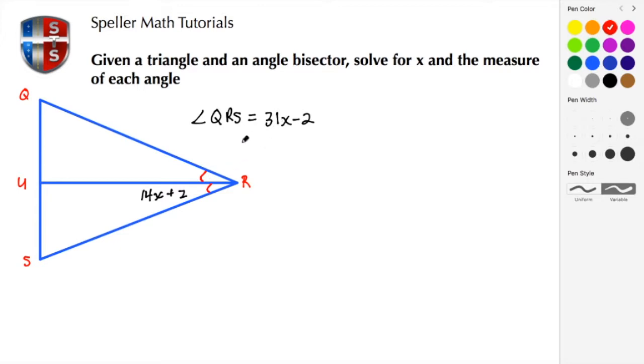So what we need to do is take QRS and divide it by 2, and that's going to give us the angle of QRU, which would also be the same measurement as URS. So let's go ahead and do that.